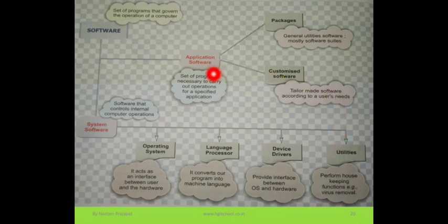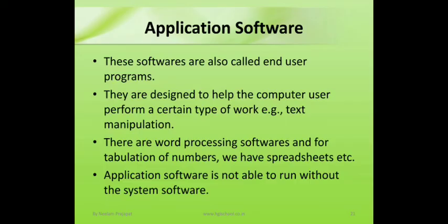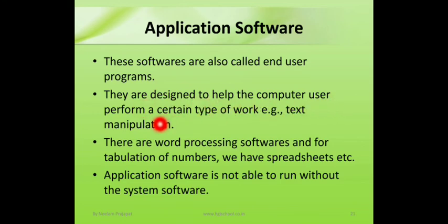Application software comes in different types — some come in packages and some are customized softwares. These softwares are also called end-user programs because we use them directly. They are designed to help the computer user perform a certain type of work.